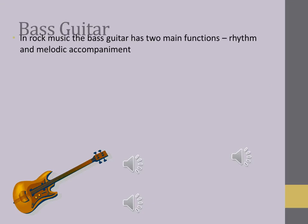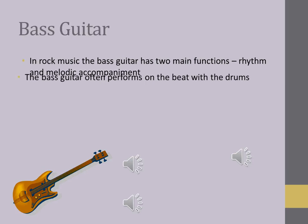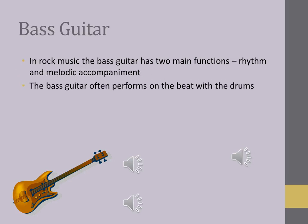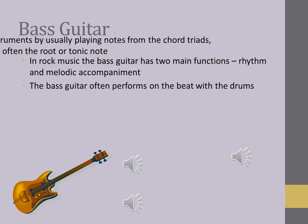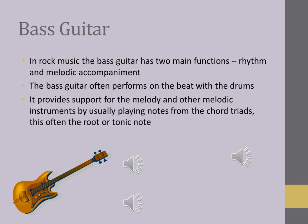The bass guitar. In rock music the bass guitar has two main functions: rhythm and melodic accompaniment. The bass guitar often performs on the beat with the drums. It provides support for the melody and other melodic instruments by usually playing notes from the chord triads. This is often the root or tonic note.